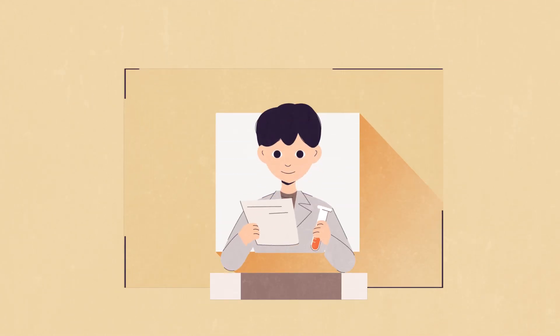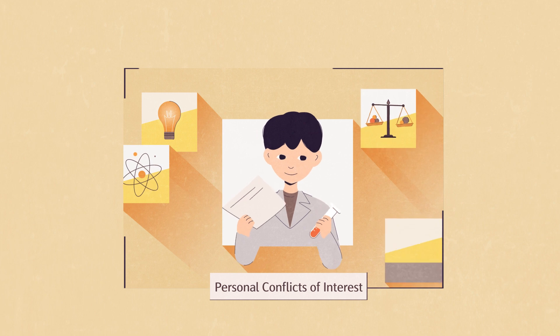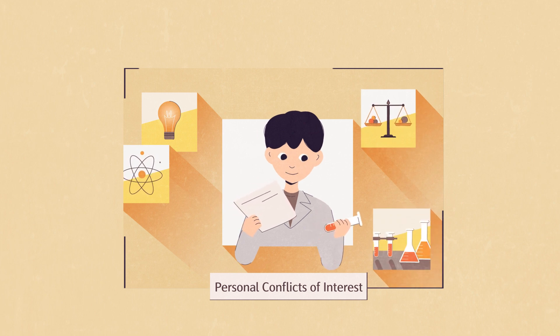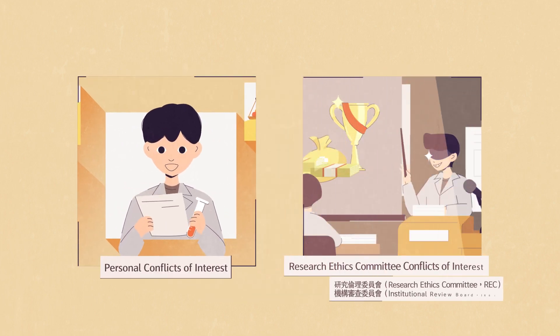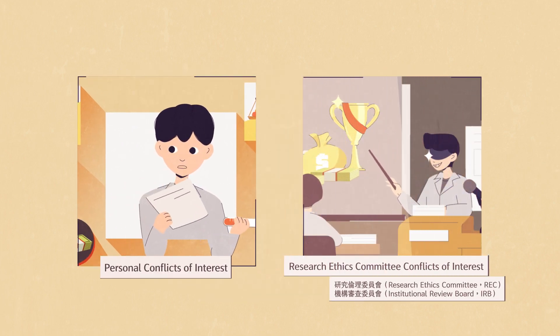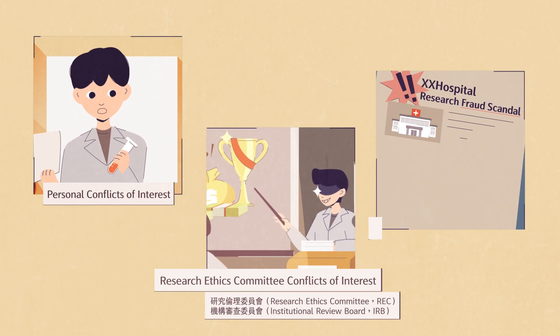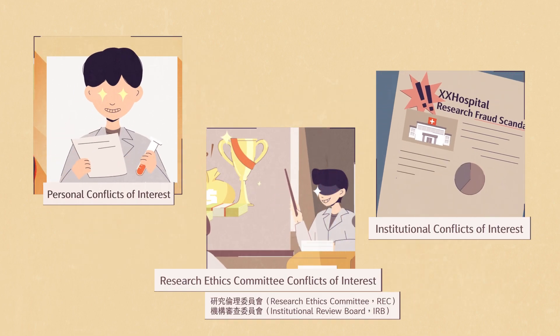Conflicts of interest can be largely classified into personal conflicts of interest, Research Ethics Committee (REC) or IRB conflicts of interest, or institutional conflicts of interest.